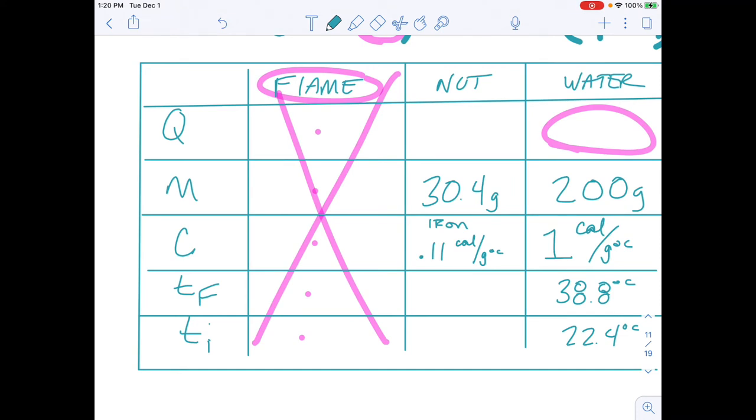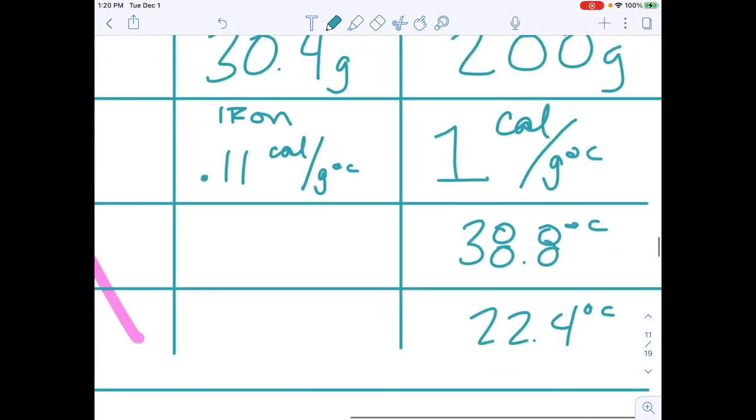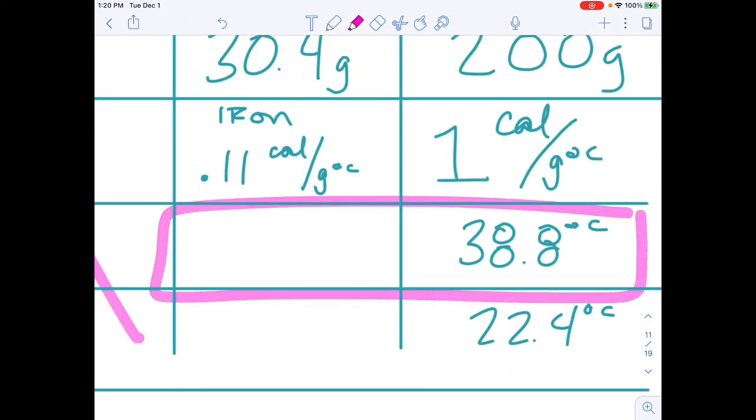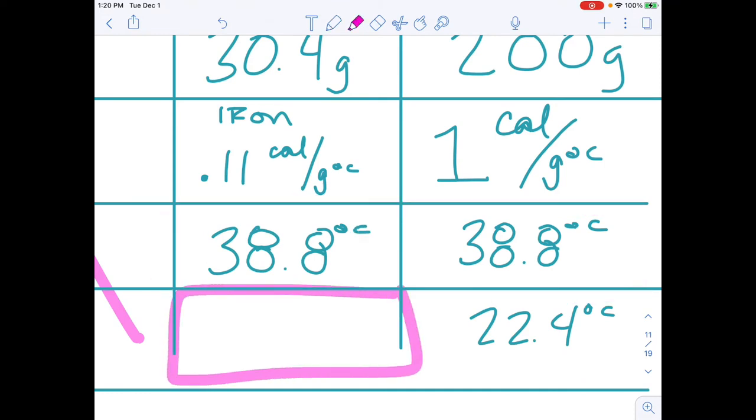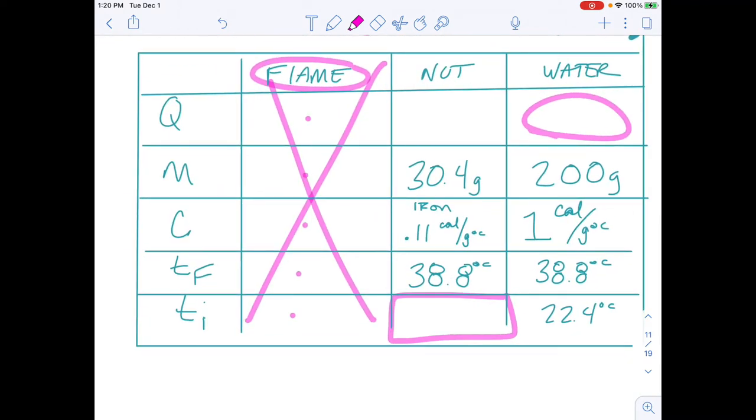And what we could do also is we could say that since they were in a system together, the final temperature of the metal was also 38.8 degrees Celsius, which only leaves us with this: What is the initial temperature of that metal?